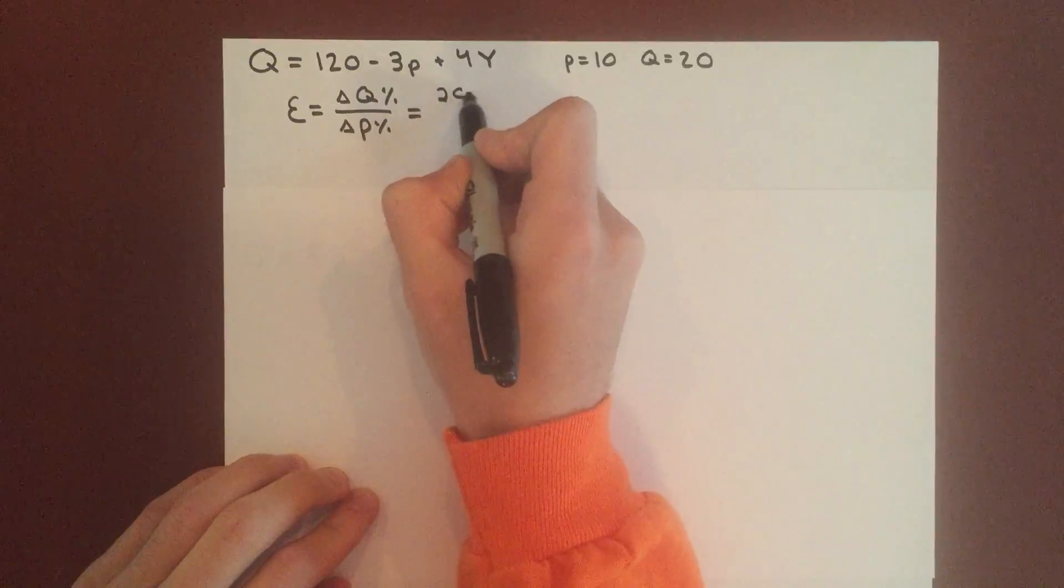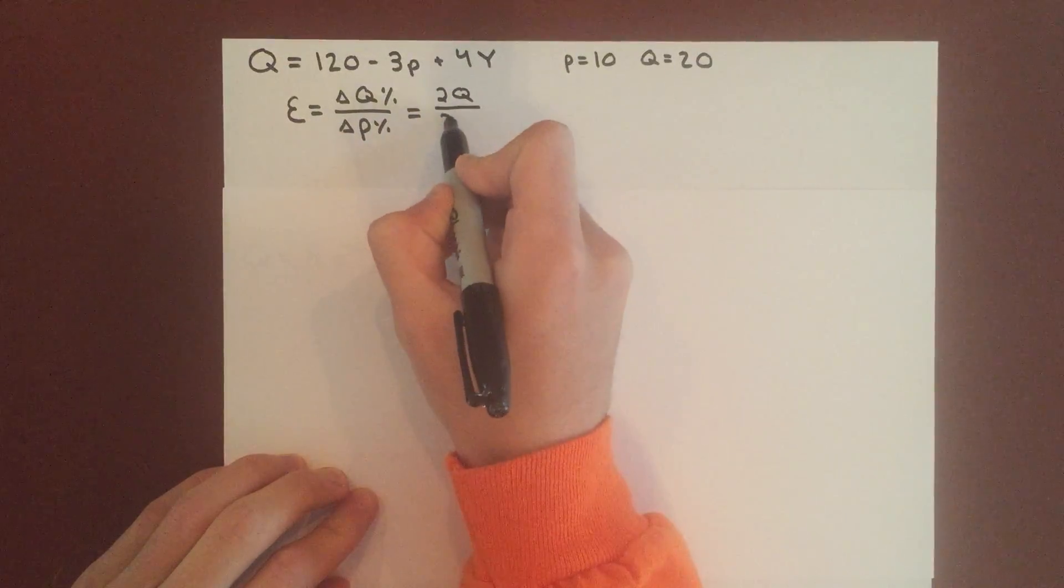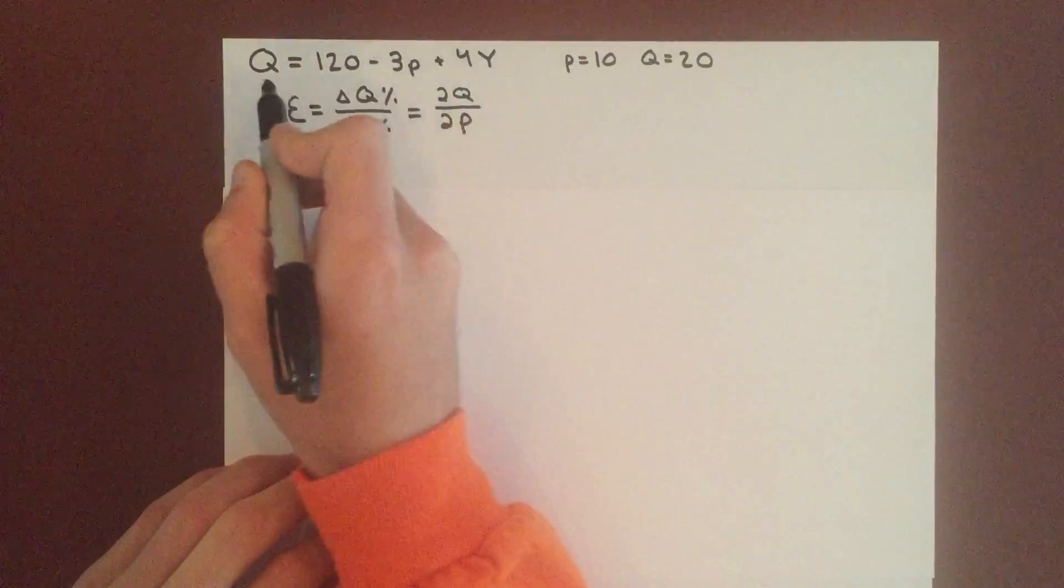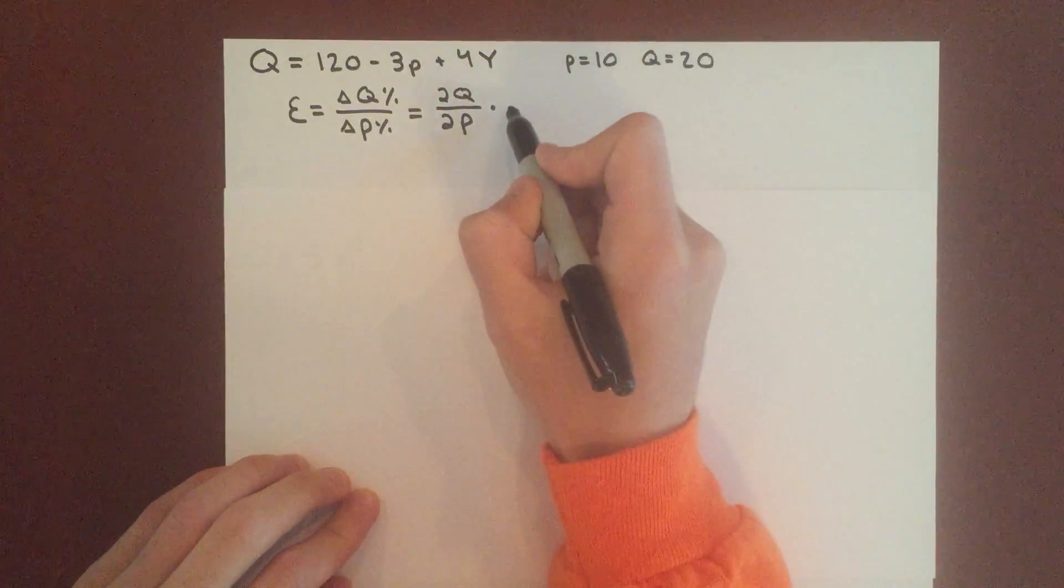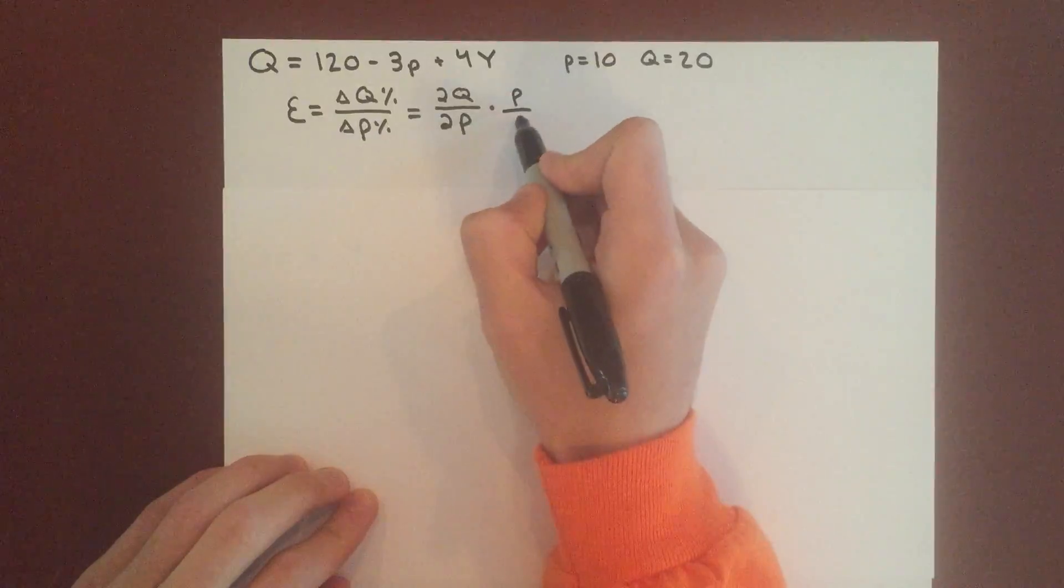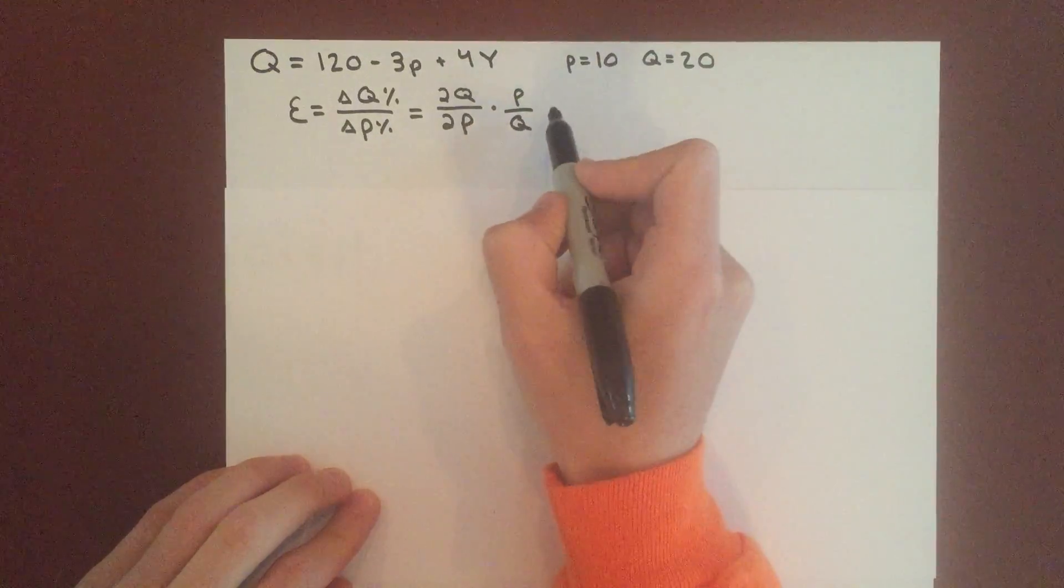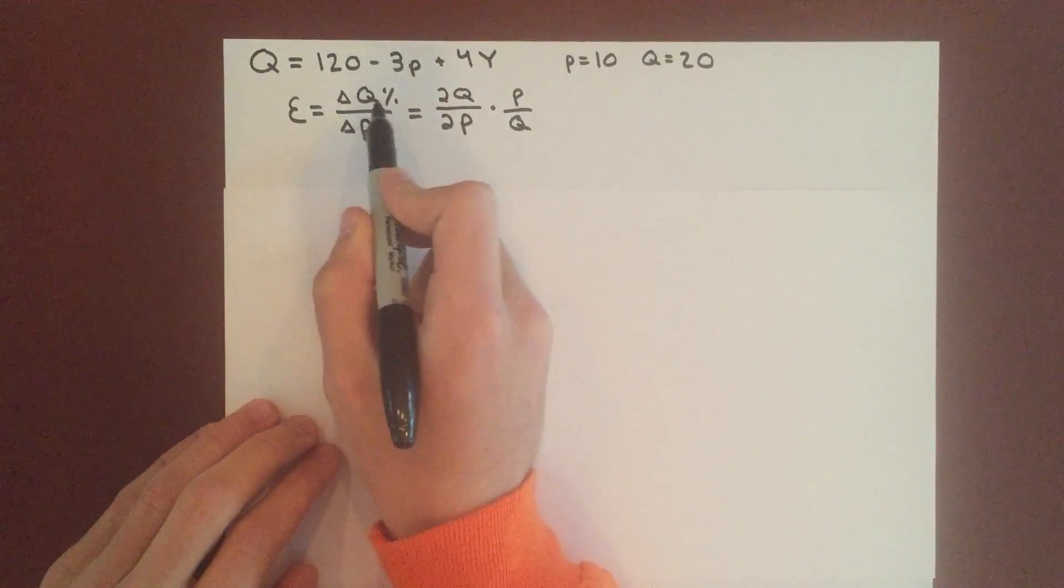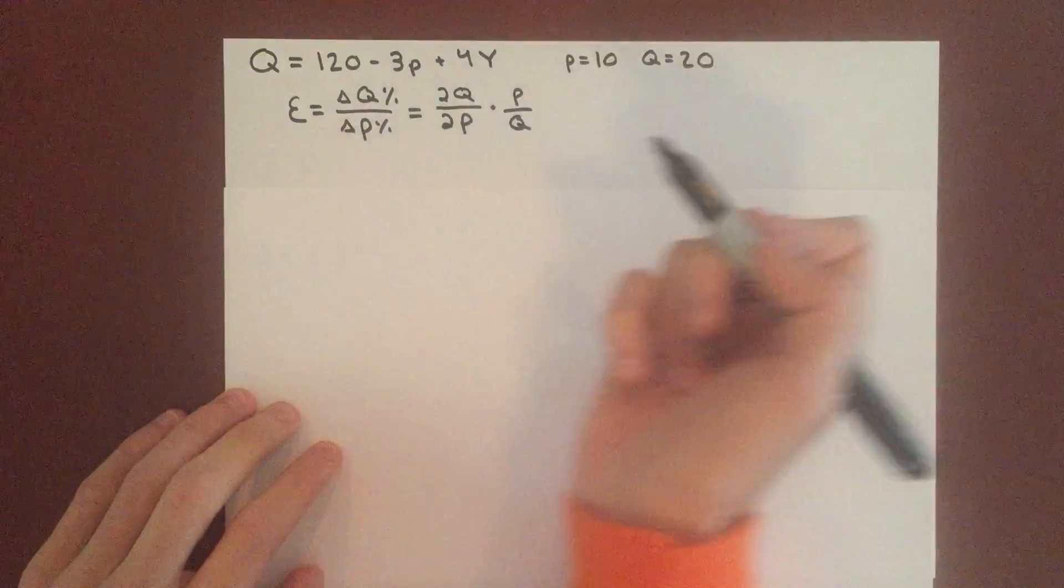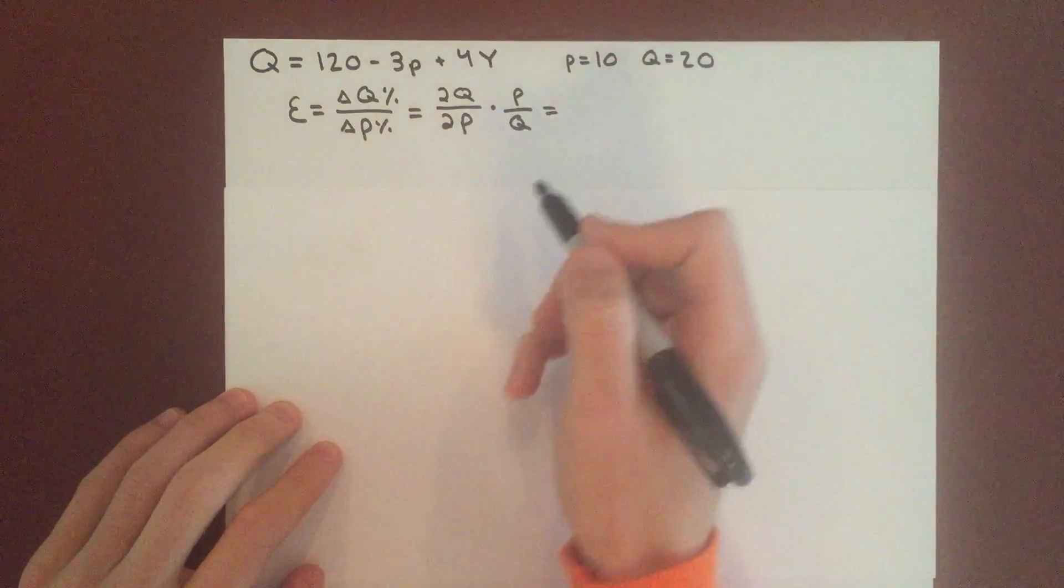as the partial derivative of the quantity with respect to price, and then times P over Q. This is just exactly the same as the change in quantity as a percentage over change in price as a percentage, but